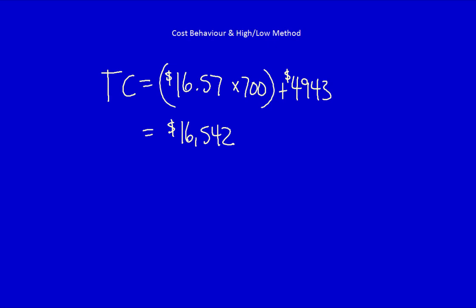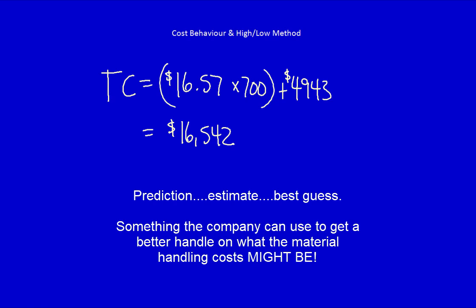The estimated total cost of material handling if we had 700 transfers is $16,542. If we actually had 700 transfers, would the total cost be $16,542? We actually don't know that. What we know is we can use this formula to predict that it will most likely fall close to $16,542. It won't be $16,542, but it will be close to it, so that we can make some kind of predictions at different levels of activity.